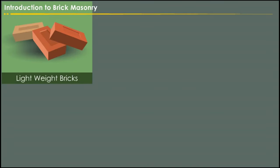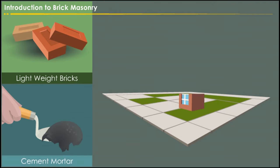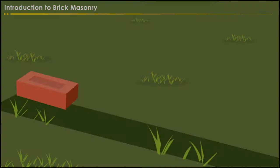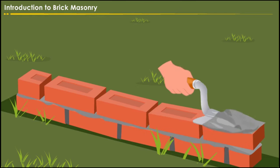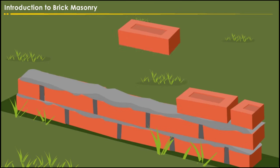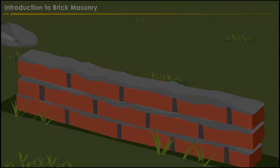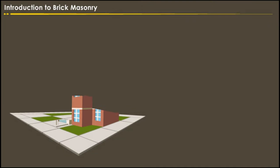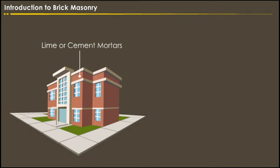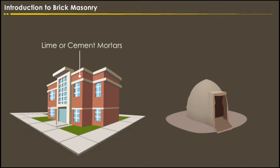Slowly, people started to use lightweight bricks and cement mortar for the construction of buildings. For the purpose of constructing different types of bonds are followed. Brick masonry is built with bricks bonded together with mortar. For permanent buildings, lime or cement mortars are used, but for temporary sheds, mud mortar may be used.